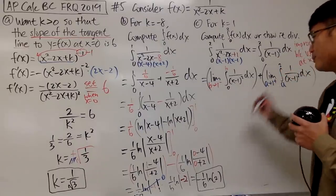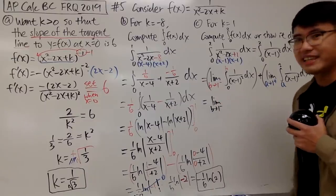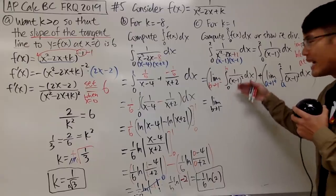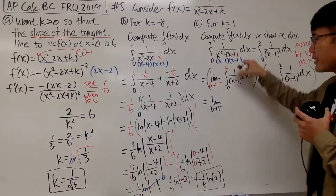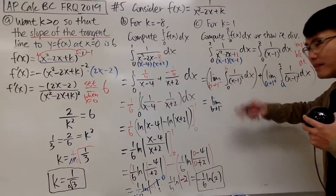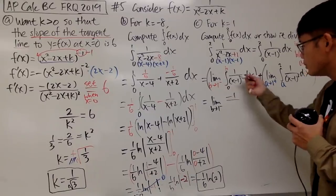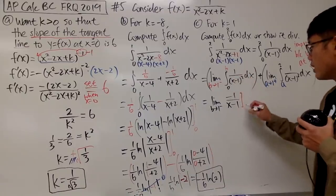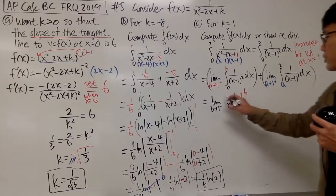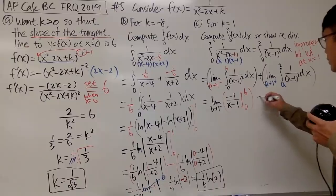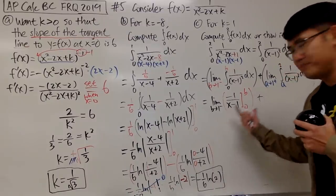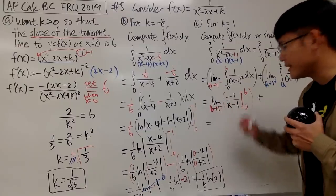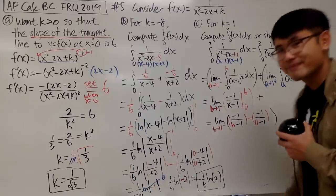Now we just have to work out each part. For the first part, we can do a u-substitution: let u equal x minus 1, so du equals dx. We integrate u to the negative 2 power, which gives negative 1 over u, which is negative 1 over (x minus 1). That's the antiderivative. We still have to plug in numbers from 0 to b.